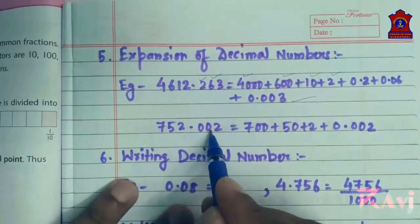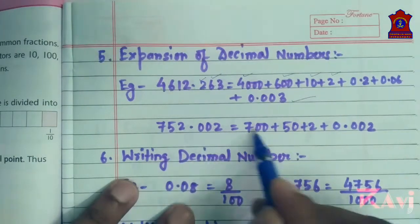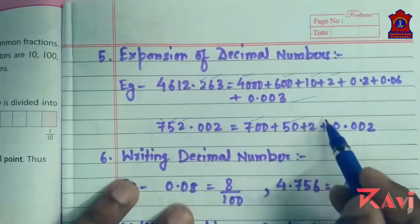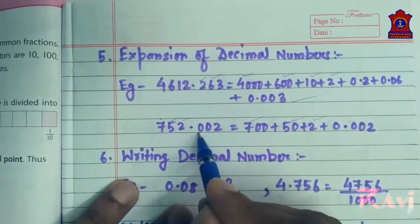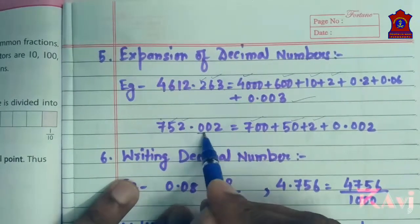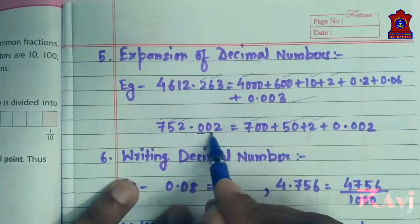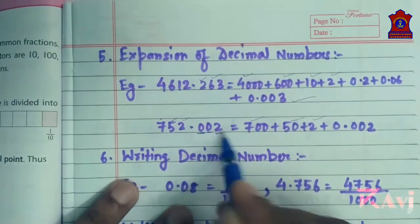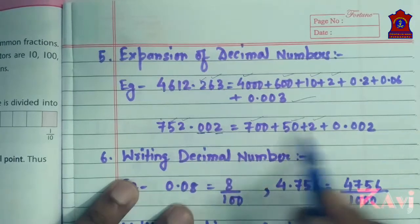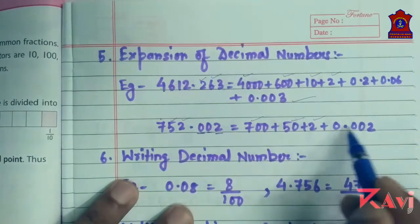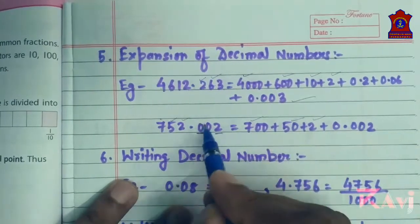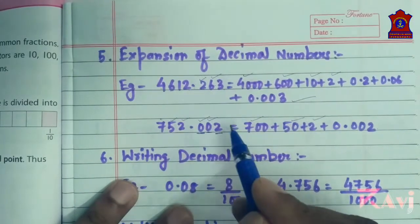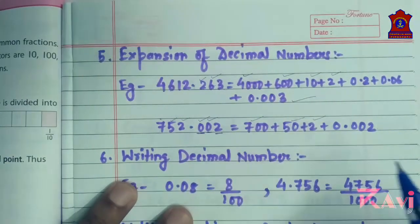Similarly, 752.002. So: 750, then 2. What is at the tenths place? Nothing. What is at the hundredths place? Nothing. What is at the thousandths place? 2. So the answer will be 0.002. There is no need to mention the tenths place and hundredths place when the value is 0.